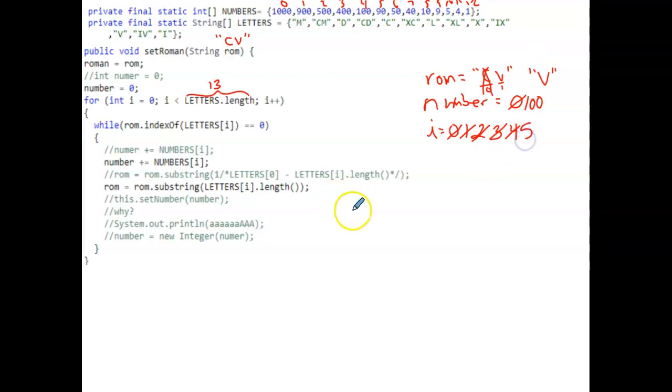Then we increment i to 5, we go back in and check, and element 5 is XC. So then we increment to 6, which is L. We increment to 7, which is XL. We increment to 8, which is X. We increment to 9, which is IX. We increment to 10 and we hit V, and V is what our current value of ROM is. So now it's going to in our while loop take the current value of number, which is 100, and add that element numbers element i, which is, i is 10, so element 10.